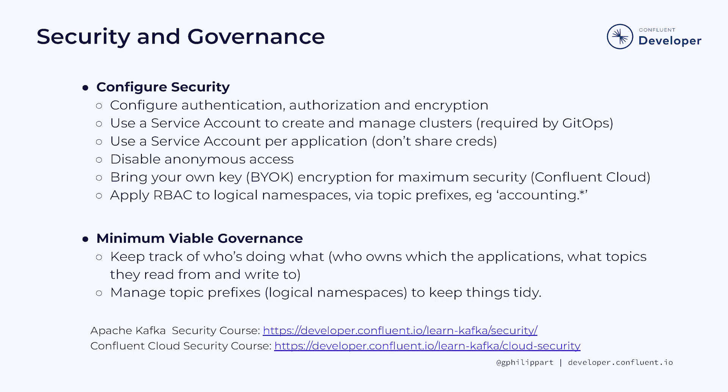Do not share the same credentials across apps. Also, don't forget to disable anonymous access. If you need a greater degree of security and privacy, which is frequently required by government, health, finance, and many other industries, you can self-manage the encryption key with Confluent Cloud's Bring Your Own Key encryption. It's also recommended to apply role-based access control to logical namespaces via topic prefixes. For example, accounting.* would refer to all accounting topics — this way, you can prevent non-accounting applications from writing to this topic.